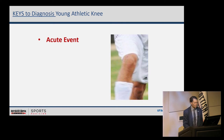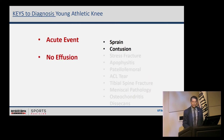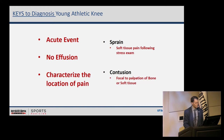If we start with an acute event, that narrows it down to sprain, contusion, patellofemoral injury, ligamentous injury, tibial spine, or meniscal pathology. If the patient doesn't describe a knee effusion and you don't find one, the list gets narrowed quickly — that generally leads us to either a sprain or contusion. They had an acute event, no knee effusion, and so most likely we're going to narrow down onto a sprain or contusion.